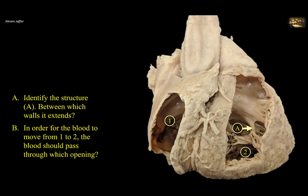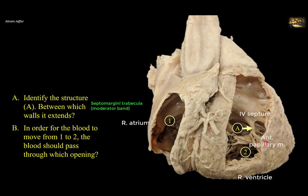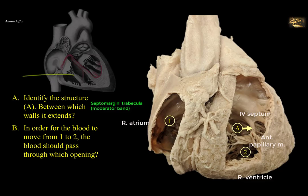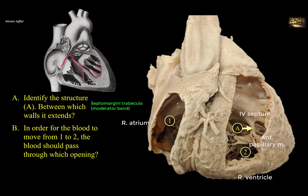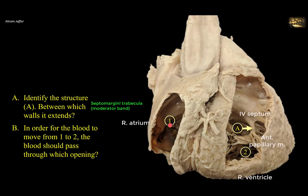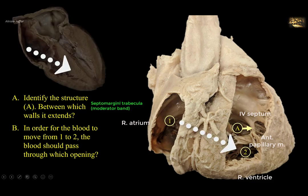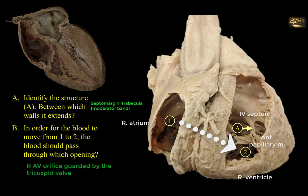Identify structure A, between which walls it extends, and identify through which opening blood must pass to move from chamber 1 to chamber 2. This is an anterior view showing the inside of the right atrium and right ventricle. Structure A is the septomarginal trabecula, or moderator band — a unique feature of the right ventricle. It forms a bridge between the lower portion of the interventricular septum and the base of the anterior papillary muscle attached to the anterior wall. It carries a portion of the right bundle of the atrioventricular bundle to the anterior wall. Blood flowing from the right atrium to the right ventricle passes through the right atrioventricular orifice, guarded by the tricuspid valve.